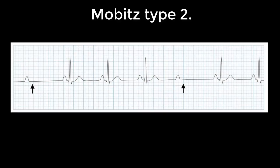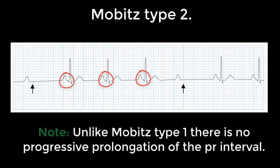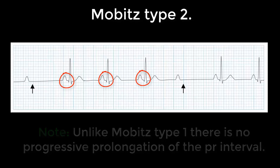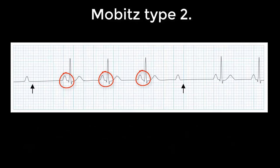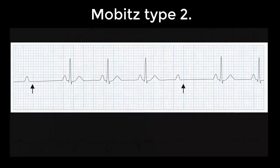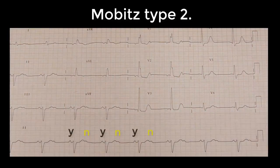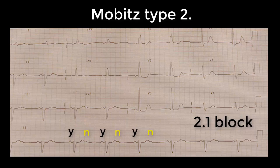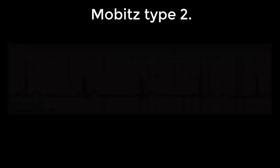In Mobitz type two, the other form of second degree heart block, there is intermittent non-conduction of the P wave, but you don't get that prolongation of the PR interval we saw in Mobitz type one Wenckebach. Here the PR interval is the same each time, but some of the P waves don't get conducted. Normally there's a regularity to how often the P wave gets through.